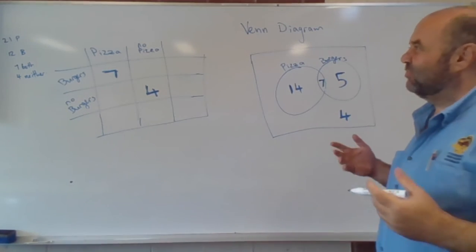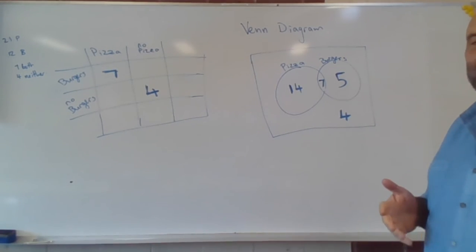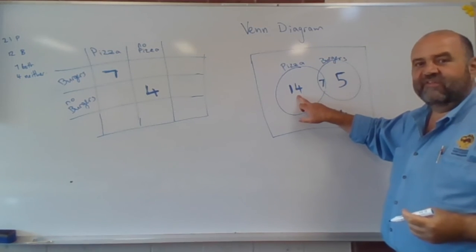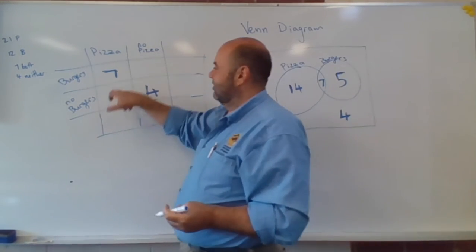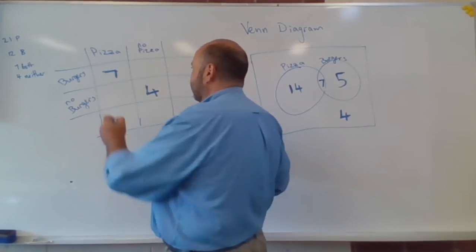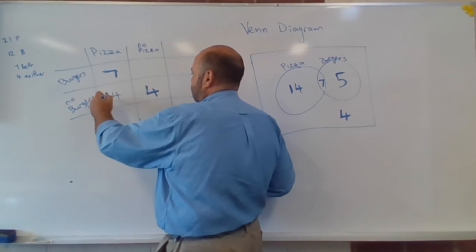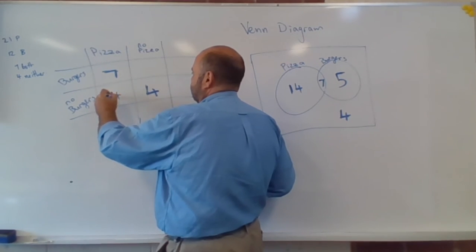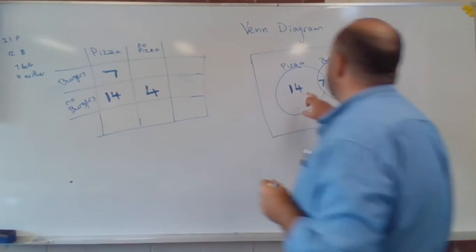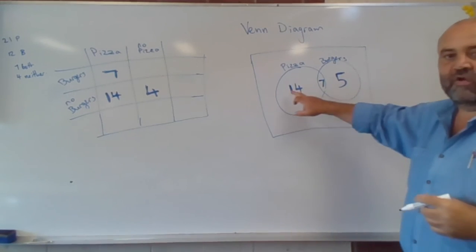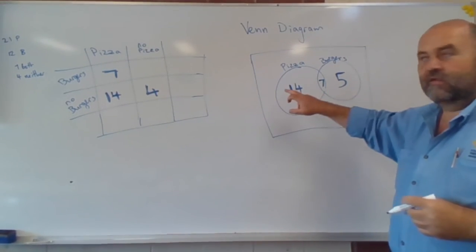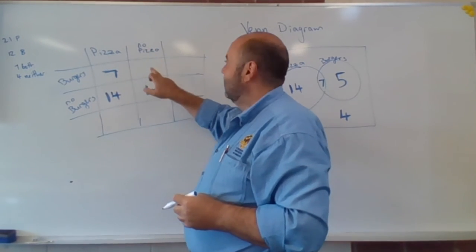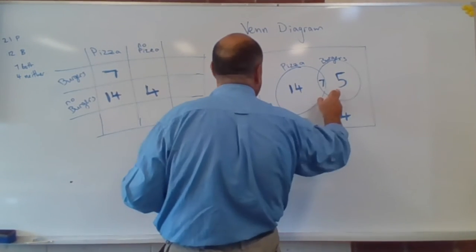How many people liked pizza but didn't like burgers? Well, these 14 people here, they liked pizza but they didn't like burgers. And how many liked burgers but not pizza? That was five.